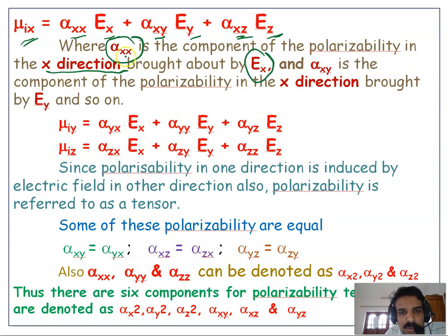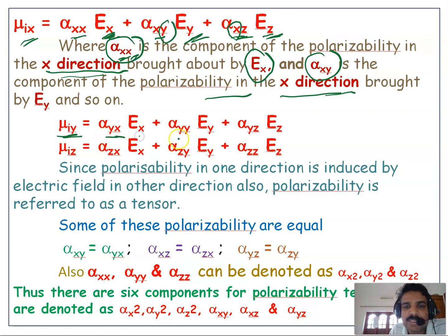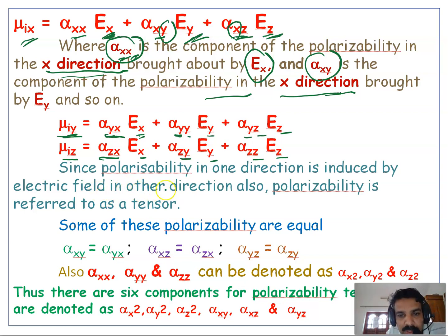We can write: μ_ix = α_xx·E_x + α_xy·E_y + α_xz·E_z, where α_xx is the component of polarizability in the x direction brought about by E_x, and α_xy is the component of polarizability in the x direction brought about by E_y. Similarly, μ_iy = α_yx·E_x + α_yy·E_y + α_yz·E_z, and μ_iz = α_zx·E_x + α_zy·E_y + α_zz·E_z. Since polarizability in one direction is induced by the electric field in another direction, polarizability is referred to as a tensor.